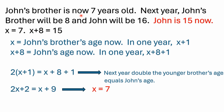If John's younger brother is seven years old and we're saying John is 15 today, seven plus eight is 15 — that does match. That makes John eight years older than his younger brother. So John's younger brother is seven, John is 15. One year from now, the younger brother will be eight, John will be 16 — that's double. When you look through that, it all matches the problem.